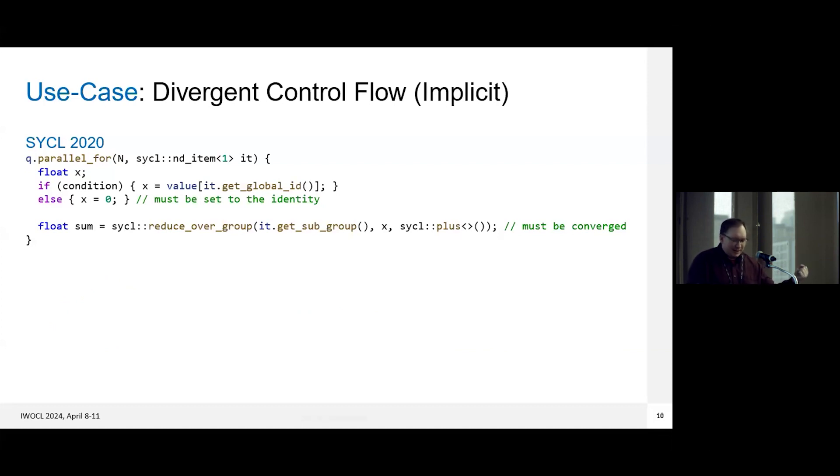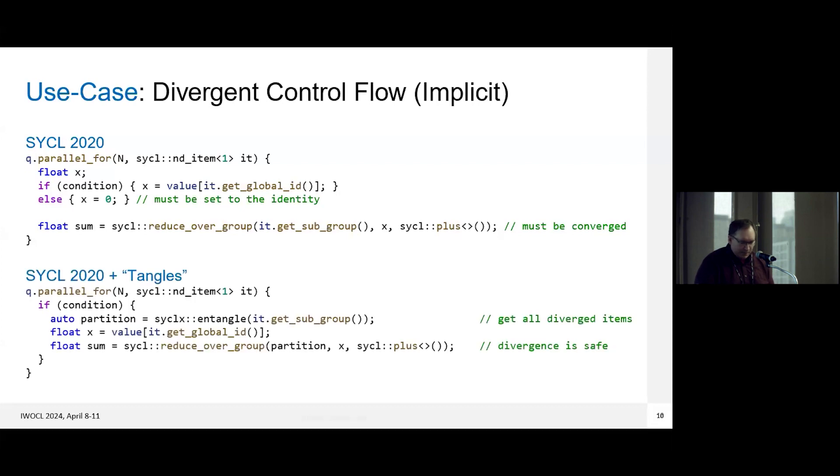So the previous example showed how you could handle divergent control flow in a very explicit fashion with a logical group based on a certain condition, but you could also handle this in a more implicit fashion. So we have pretty much the exact same example as before, we have how we would do it in SYCL 2020. But another way to do it is to use something we call a tangle, where you could write your loop and just have your normal if condition at the outer scope, and then say, just give me all the diverged items, entangle all these threads that happen to be currently executing in this branch, create a group over it, and then you can invoke your group algorithms over that group. The tangles basically have the compiler automatically insert code to track the divergence and ensure that things are correct and reconverge when appropriate.